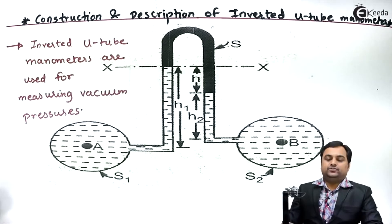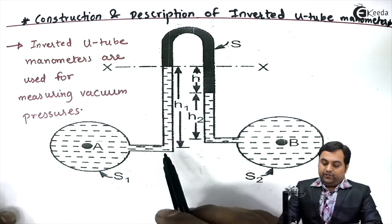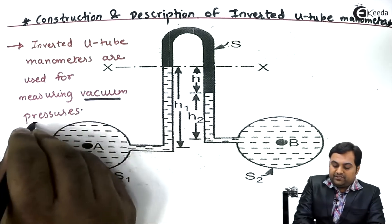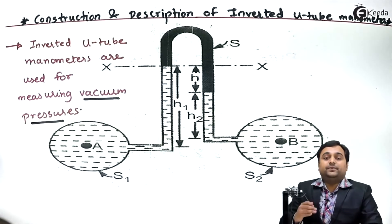Previously we have seen that differential manometers were used to measure pressure above atmosphere. Inverted U-tube manometers are used for vacuum pressure measurement, that is the pressure would be below atmospheric.